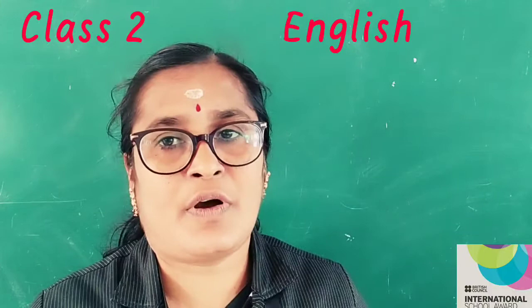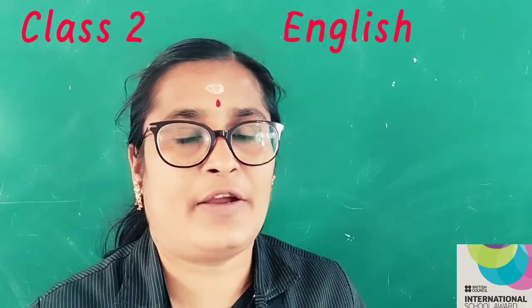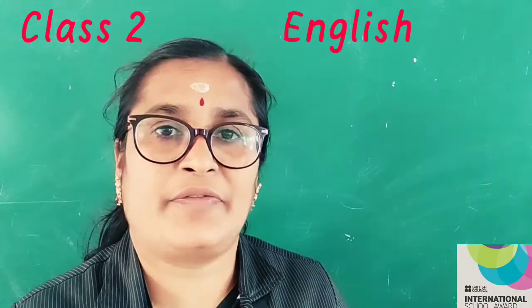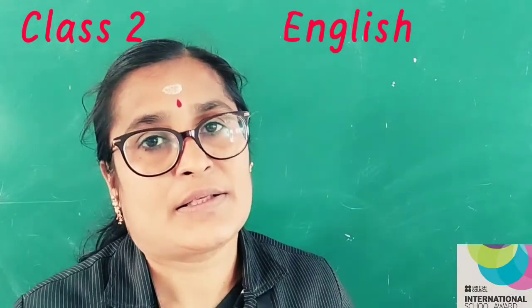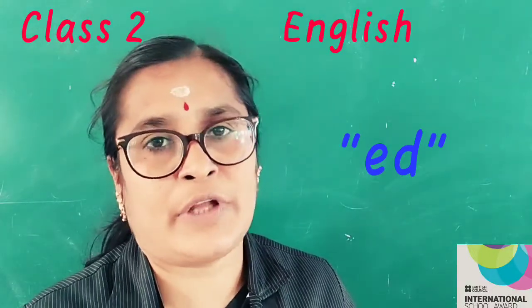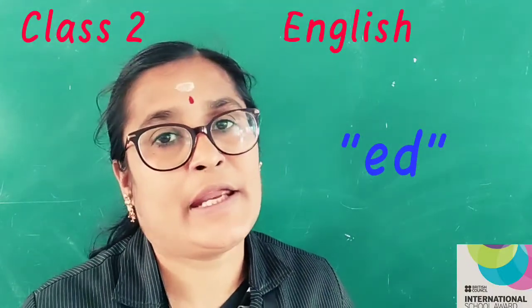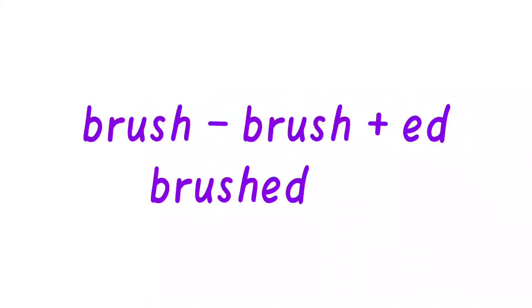In the pep activity, we saw some action words. Now let us look a little deeper. In pep 6.5, we saw words such as listen, talk and brush — these are action words that we do now. So when we talk about the actions that had happened some time ago, we add 'ed' to the end of the action word. For example: listen → listened (listen + ed); talk → talked (talk + ed); brush → brushed (brush + ed).